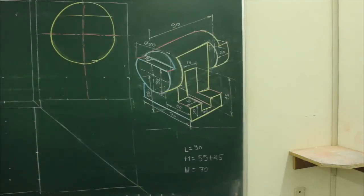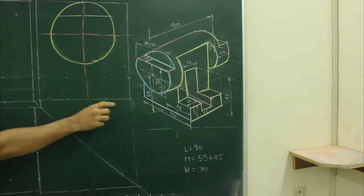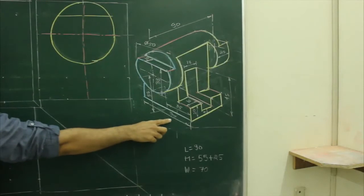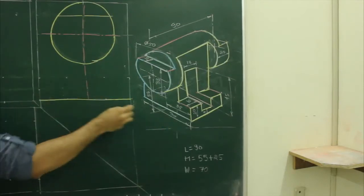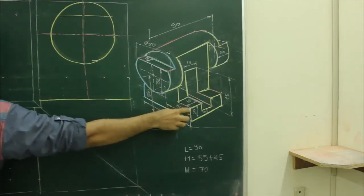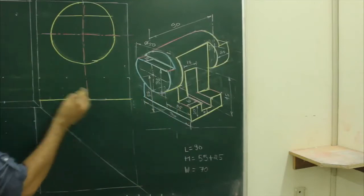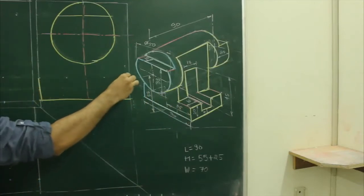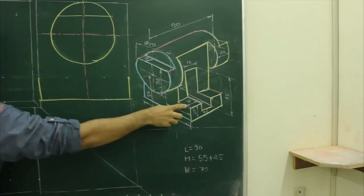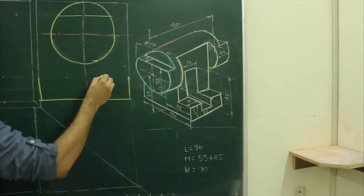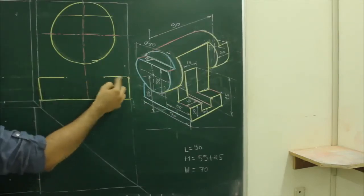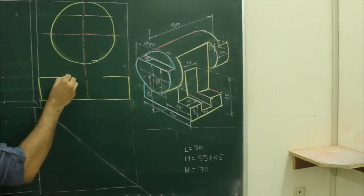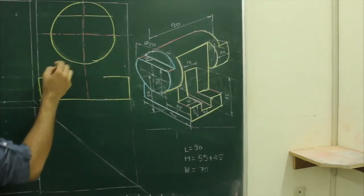In this diagram, the width given is 70, so we draw 70. Then we will go 20 up on both sides. Then it goes inside by 20, so we will go 20 inside from both sides, and then we will go up.